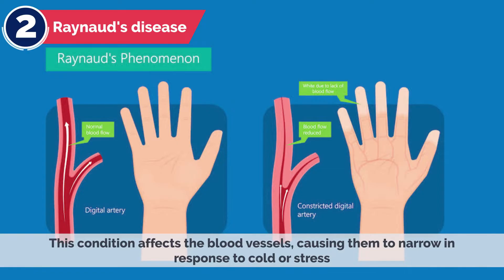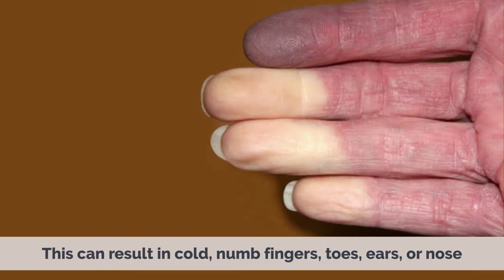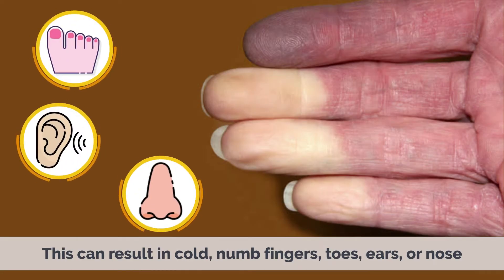Second, Raynaud's disease: this condition affects the blood vessels, causing them to narrow in response to cold or stress, leading to reduced blood flow to the extremities. This can result in cold, numb fingers, toes, ears, or nose.